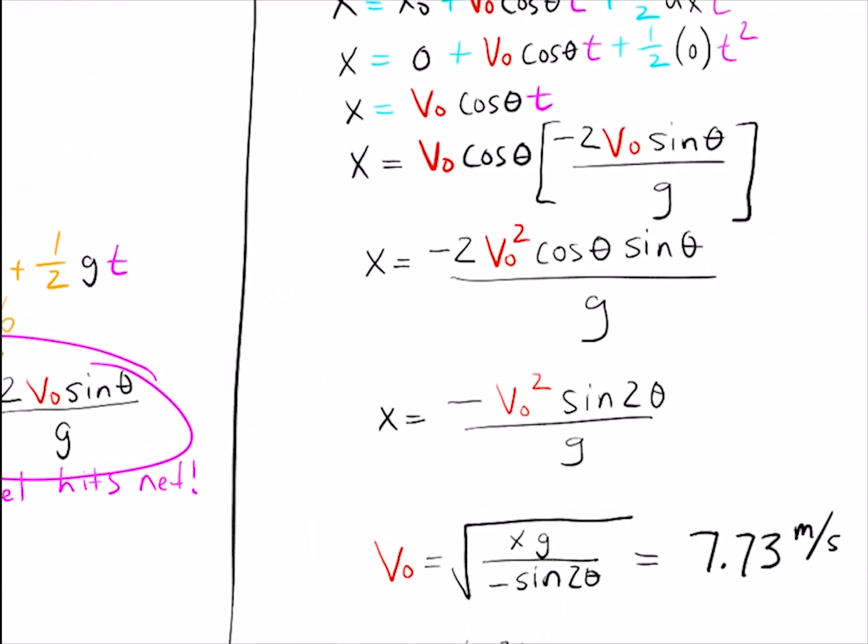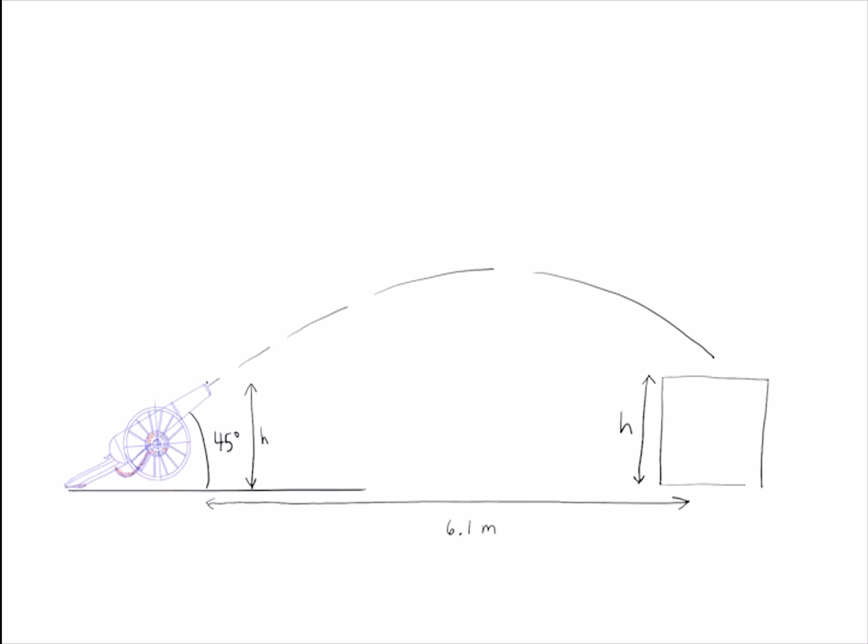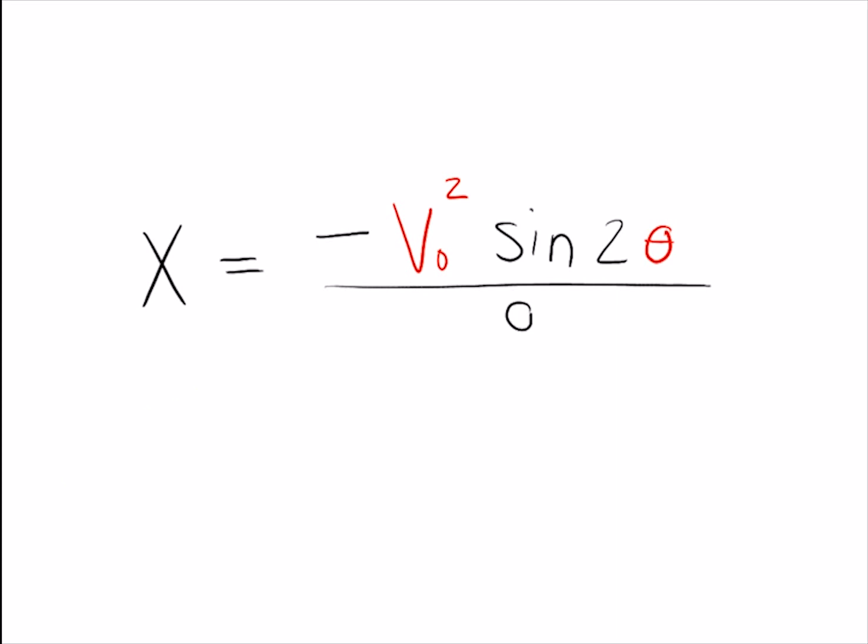On the way to our solution for the initial velocity, we actually derived the equation for the range of the cannon. This equation holds true as long as we meet the assumption that the height of the cannon is the same as the height of the net. Because we now know the initial velocity of Zazzle's cannon, we can predict how far she will fly for any angle theta.